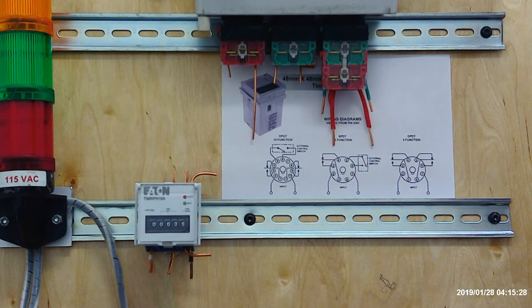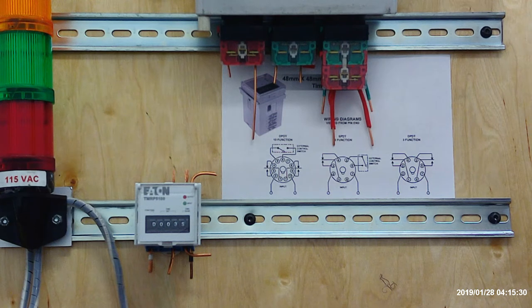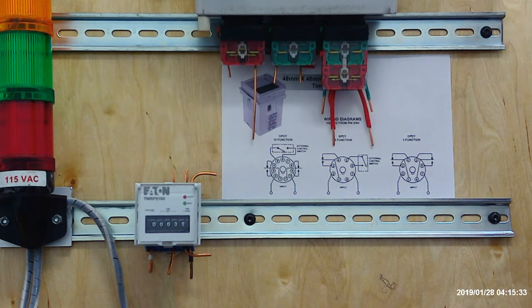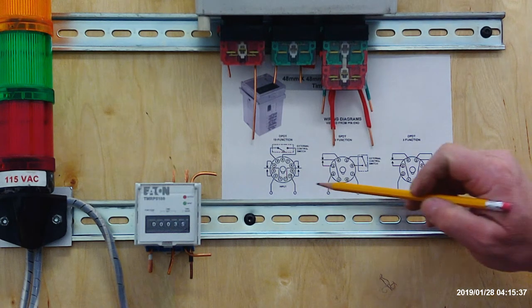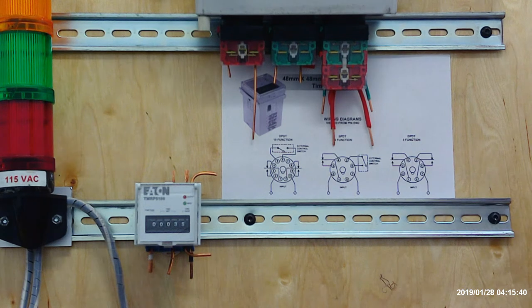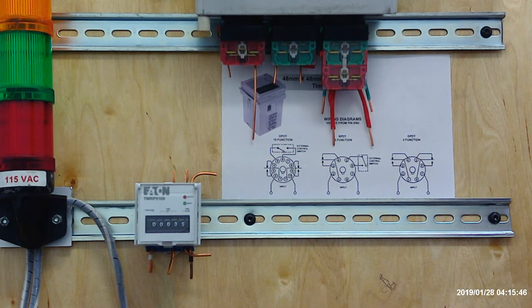In this video we're going to go over the operation of an off-delay timer. The first thing to really look at is the diagram and how to interpret it. What you see on the 2 and the 10, that's going to be where the coil is, what you need to energize to keep everything timing and operational.